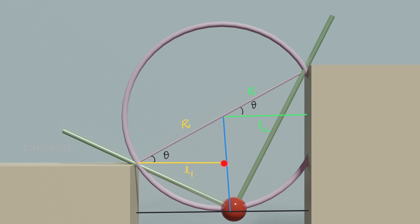From here I am drawing one horizontal line and from here also I am drawing one horizontal line till this vertical wall. We can say that this is L1, the distance of this bead from this vertical wall, and this is L2, the distance of this bead from this vertical wall.